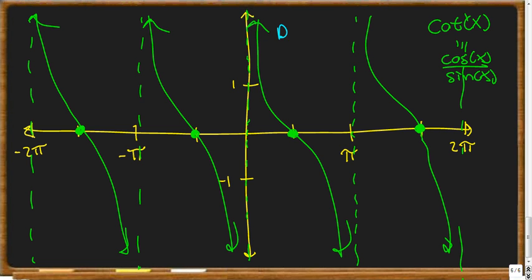And our domain here is like before, x can't equal πk, and our range is going to be all real numbers. So, this is like tangent, just a little bit reversed.